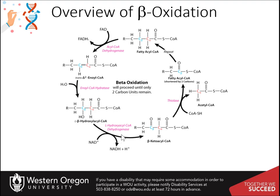The second reaction is the addition of water across the double bond to form the beta hydroxy intermediate. The second oxidation converts the alcohol to the ketone, creating beta-ketoacyl-CoA and one molecule of NADH. The thiolase then cleaves the carbon-carbon bond between the alpha and beta position, creating a molecule of acetyl-CoA and a fatty acyl-CoA two carbons shorter.